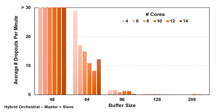Here are the measurements for the hybrid orchestral project in the master-and-slave configuration. Along the horizontal axis are the buffer sizes tested: 48, 64, 96, 128, and 256. For each buffer size there are six vertical bars representing the average dropouts per minute for 4, 6, 8, 10, 12, and 14 cores. I capped the plots at 30 dropouts per minute, because if you're getting more than 30 dropouts per minute you're not going to run the project at that buffer size anyway — it's unworkable. Even two or three dropouts per minute can be unworkable. For the 48 buffer size there were many hundreds of dropouts per minute. For 64 they came down to around 10 to 20, with definite dependence on core count, but still severe enough that you wouldn't run the project there.